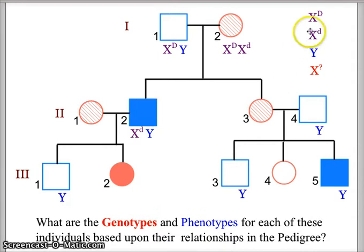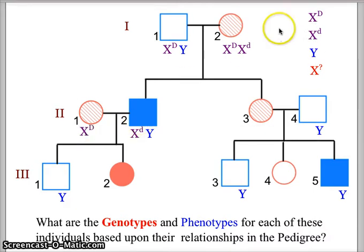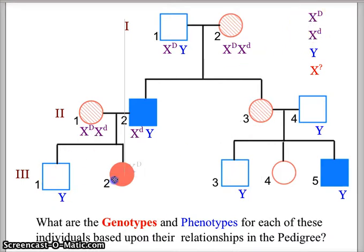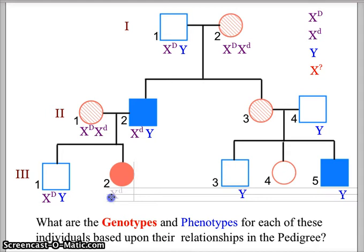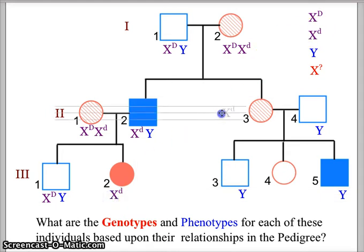He marries a female who is also a carrier, so she is going to be X capital D, X lowercase d. Their son in generation three does not have Duchenne, so he's going to be X capital D, Y. Their daughter, unfortunately, has Duchenne — she gets the X lowercase d from her mom, and she can only get the X lowercase d from her dad, so she is going to have Duchenne muscular dystrophy.